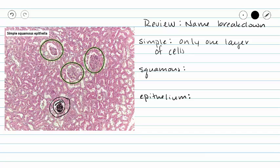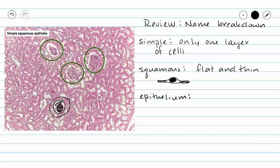Our next word is 'squamous.' What does squamous mean? All squamous cells are flat and thin. When we zoom in, we are going to see that all of our squamous cells are very thin. In my opinion, a squamous cell kind of looks like a fried egg. We have the yolk in the middle — that's going to be our nucleus — and then the white of our egg envelops the nucleus, but all you are left with is a thin section on the sides.